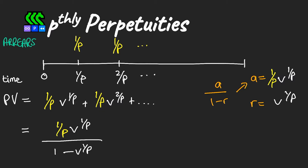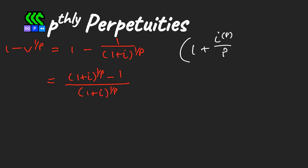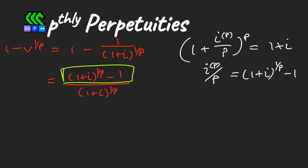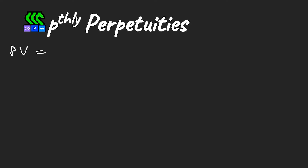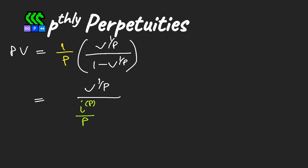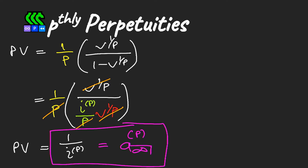To simplify, we rewrite 1 minus v^(1/p) in expanded terms, pulling out the formula for i^(p) and its relationship to (1+i). We find terms that match, substitute back in, and see that the numerator v^(1/p) cancels along with p, leaving us with the present value equal to 1 over i^(p). We use the notation in pink to represent this.